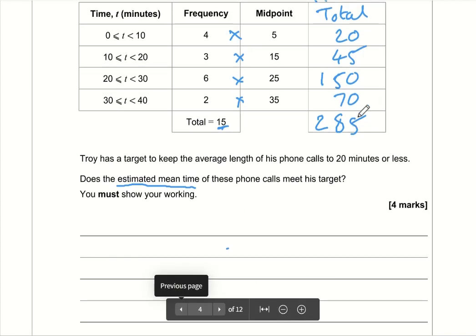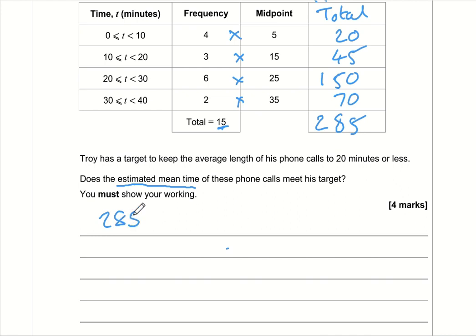0 plus 5 plus 0 plus 0 is 5, 2 plus 4 is 6, 6 plus 5 is 11, 11 plus 7 is 18, carry the 1. So we've got 15 calls that lasted 285 minutes. The estimated mean is 285 divided by 15. We can't use a calculator, so we're going to use the bus stop method. 2 divided by 15 can't happen, 28 divided by 15 is 1 with remainder 13.